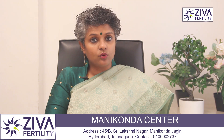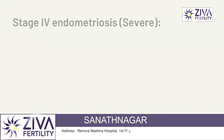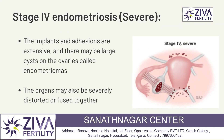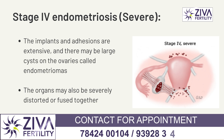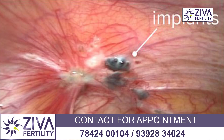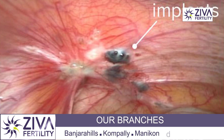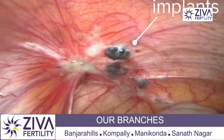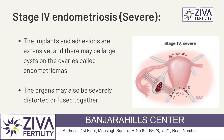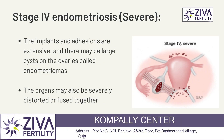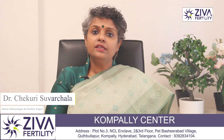Stage 4, the severe stage, is where implants and adhesions are extensive and there may be very large cysts on the ovaries called endometriomas. The organs may also be severely distorted or fused together.